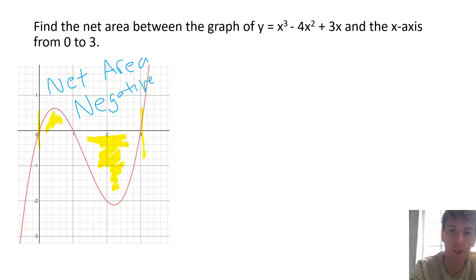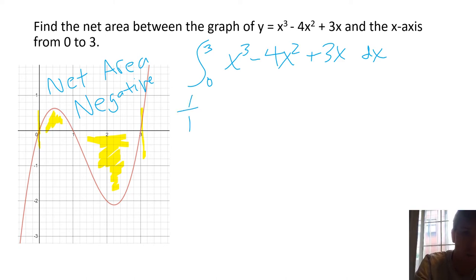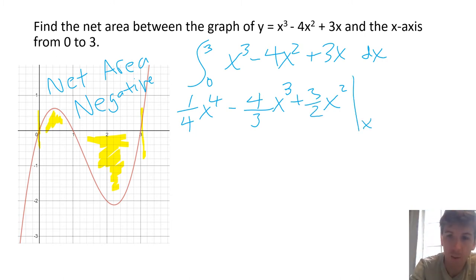Let's set up our integral. The function is x³ minus 4x² plus 3x, and we're integrating from 0 to 3. First step: integrate. That gives us 1/4 x⁴ minus 4/3 x³ plus 3/2 x², evaluated from x = 0 to x = 3.